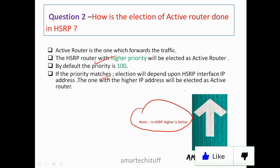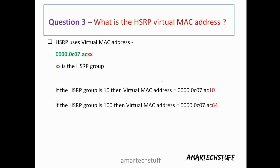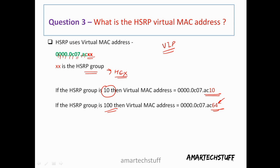Question three: What is the HSRP virtual MAC address? Just like there is a virtual IP, HSRP also has a virtual MAC address. The format is 0000.0C07.AC followed by the HSRP group number in hexadecimal. For example, if the HSRP group is 10, it will be AC10; if the group is 100, it will be AC64 — because 100 in decimal equals 64 in hexadecimal. Always remember: the HSRP group number in the virtual MAC is in hexadecimal format.